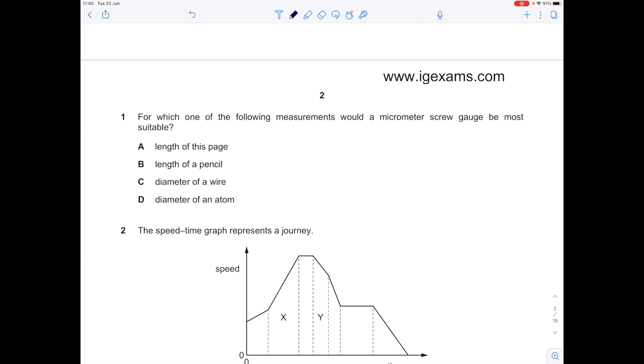For which one of the following measurements would a micrometer screw gauge be most suitable? The key clue here is that it's measuring in micrometers. The length of this page and the length of the pencil are around 30 centimeters long, so a micrometer screw gauge is not going to be suitable there. The diameter of a wire is sounding pretty good because the wire is very thin. The diameter of an atom, well atoms are absolutely tiny, so it's not going to be that. So the answer here is C.